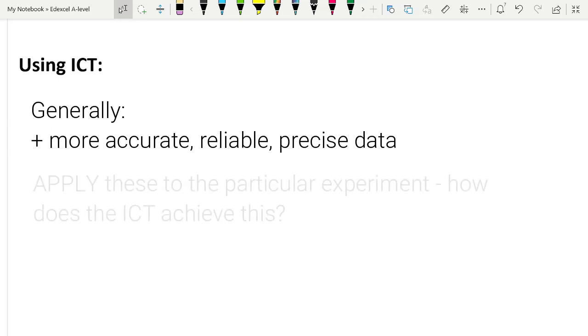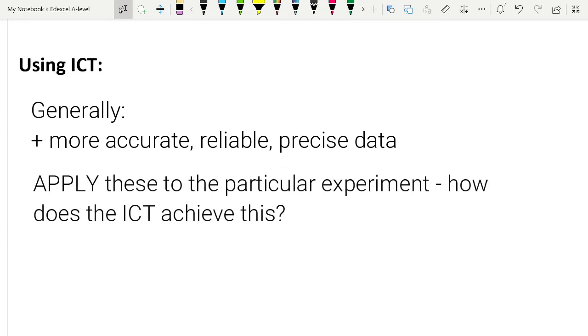You have to apply these ideas to the particular experiment they're talking about. It could be an experiment that is very familiar to you, like a trolley running down a ramp and you're using light gates to figure out the speed of the trolley.